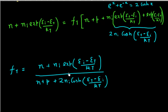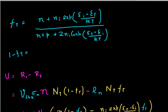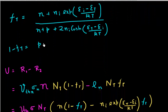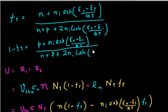Let's do the final step as well. I'll take this expression which gives me the probability of occupation of a trap. The probability of a trap being unoccupied, 1 minus Ft, comes out to be P plus Ni·exp((Et minus Ei)/kT), with the same denominator. You can put this into Ft and derive this 1 minus Ft.